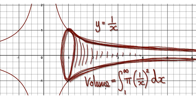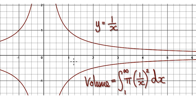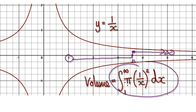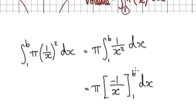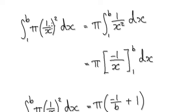To work out this volume, we need to integrate from 1 to infinity. Our normal routine is to integrate from 1 to an arbitrary point — let's say b — and then later on we allow b to move towards infinity. So instead of integrating from 1 to infinity, we're going to integrate from 1 to b and then let b move towards infinity.